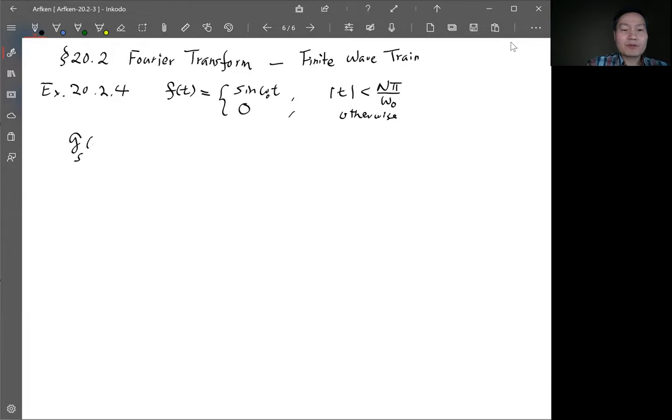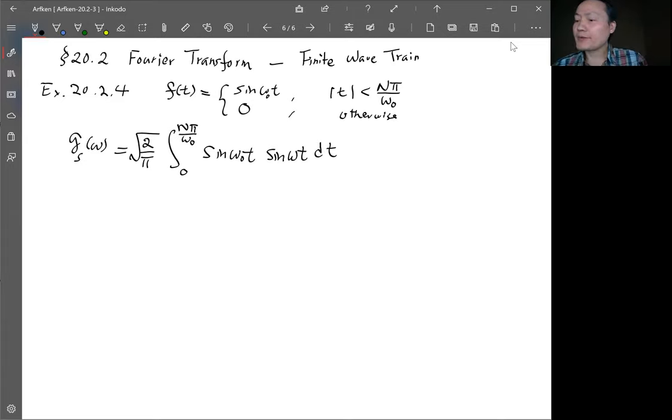So the Fourier sine transform is given by this formula: square root of 2 over pi. Now we integrate only from 0 to this range n pi over omega 0 sine omega 0 t and multiply by sine omega t. So this kind of integration.